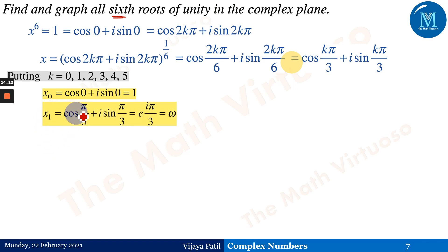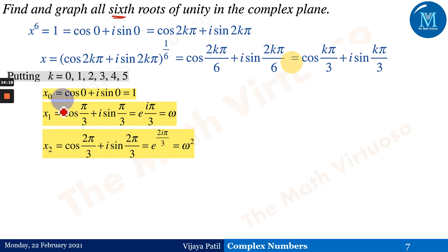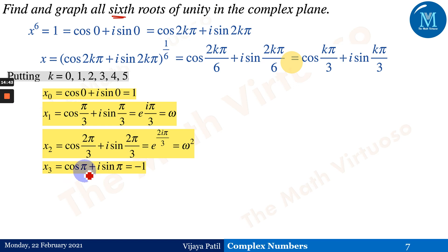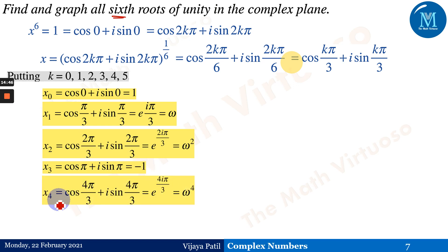For k = 1: x₁ = cos(π/3) + i sin(π/3) = e^(iπ/3), which we call ω. For k = 2: x₂ = cos(2π/3) + i sin(2π/3) = ω². For k = 3: x₃ = cos π + i sin π = −1, since sin π = 0 and cos π = −1.